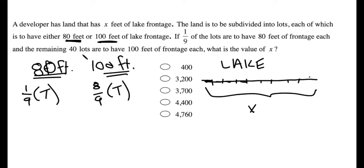But then the problem tells us how many 100-foot lots there are. The problem says the remaining 40 lots have 100 feet of frontage. So we know that eight-ninths of T is equal to 40.